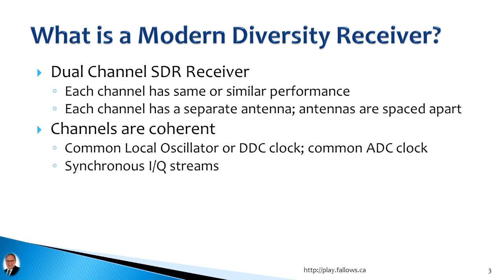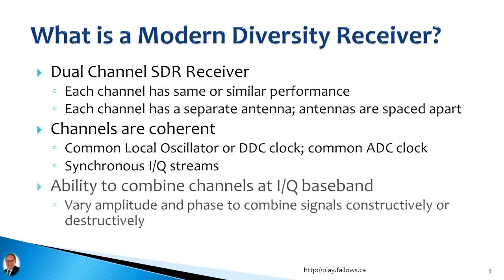The second most important part is that the channels are coherent — they're basically running together in lockstep. With your two-channel SDR, each channel has a common local oscillator, a common DDC clock, and a common ADC clock. The IQ data coming out from the receiver at baseband comes out in synchronous streams, coordinated together much like the left and right channels of a stereo audio file. Finally, you need the ability to combine the channels at IQ baseband, adjusting amplitude and phase of each IQ signal and combining them destructively or constructively.